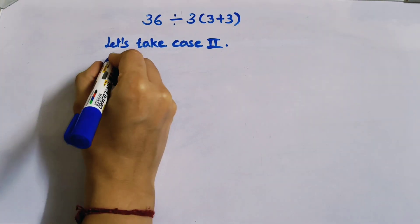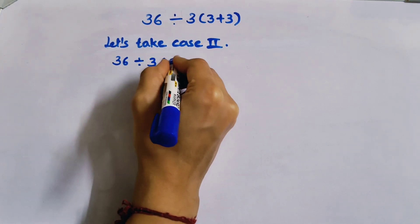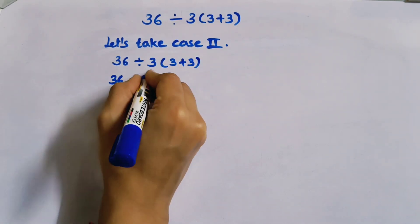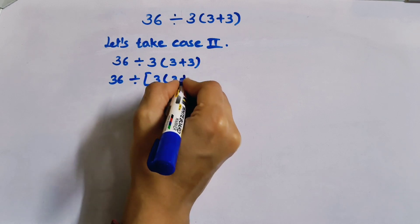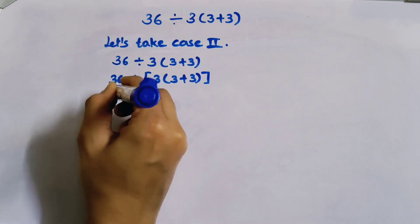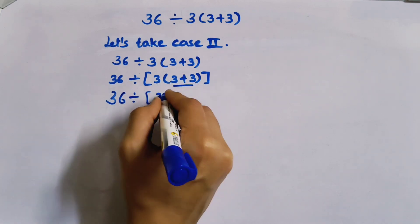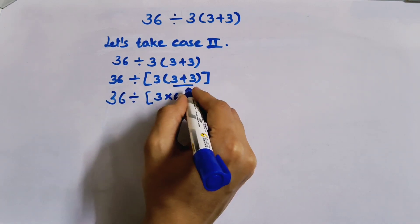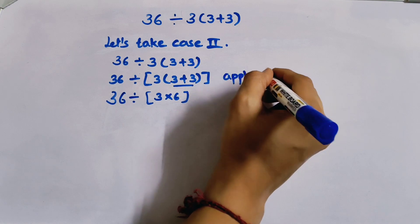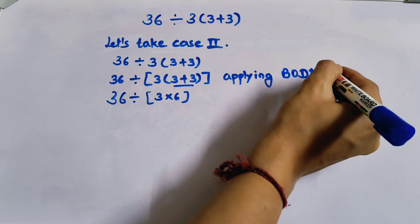36 divided by 3 bracket 3 plus 3. So I will put the square bracket now: 36 divided by [3(3+3)]. Closing the square bracket. Now applying BODMAS.